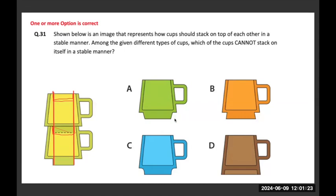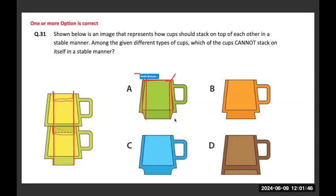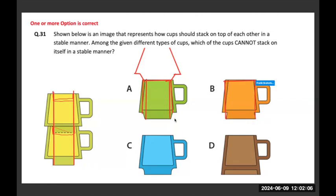With option A, when I extend the lines out they will fit in, but the problem is the lines are just jutting out — so the cup will actually be placed in a non-stacking position. With D, extending the lines shows stacking happens like this. But B is also one where stacking is not possible — they are just kept one above the other. With C also, when I extend that line outside it happens somewhere here, so C is also a case where stacking is not possible.